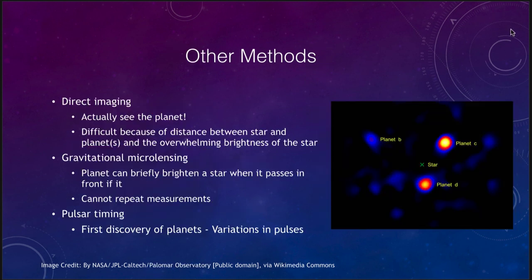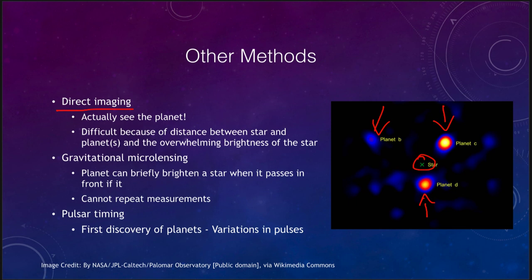Some other methods we can use include direct imaging. If we block out the starlight and look in the infrared, we can actually see the planets — several planets orbiting around a star. Any time you see a sketch of what an exoplanet looks like, it is always an artist's conception; we cannot actually see the details of these planets, only that they exist from their light. This is difficult because the planets are often very close to their star and the star is overwhelmingly bright, so we don't often get direct imaging of exoplanets.